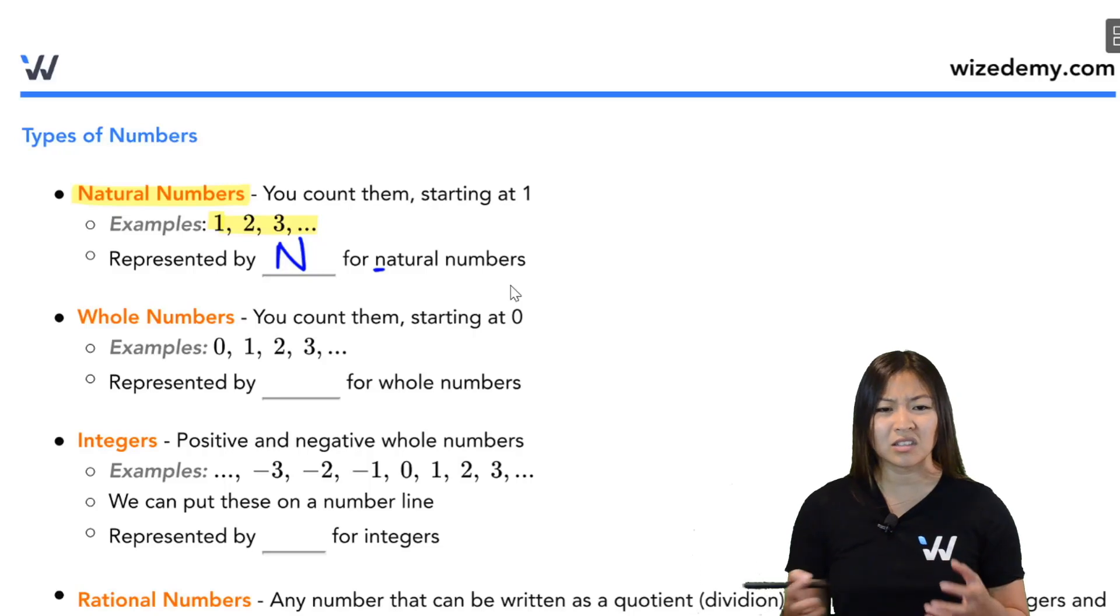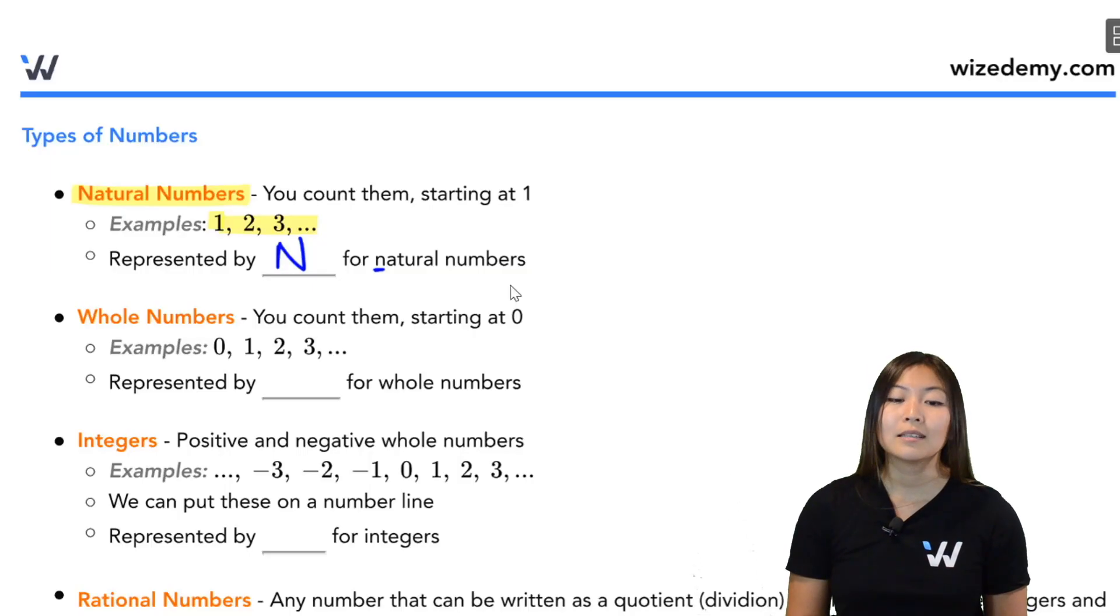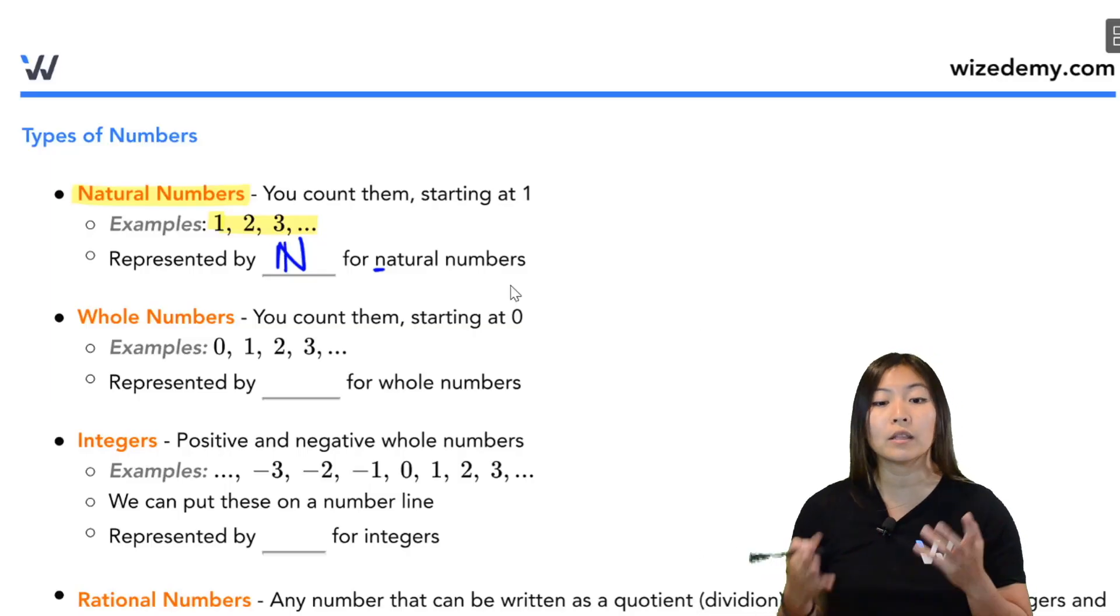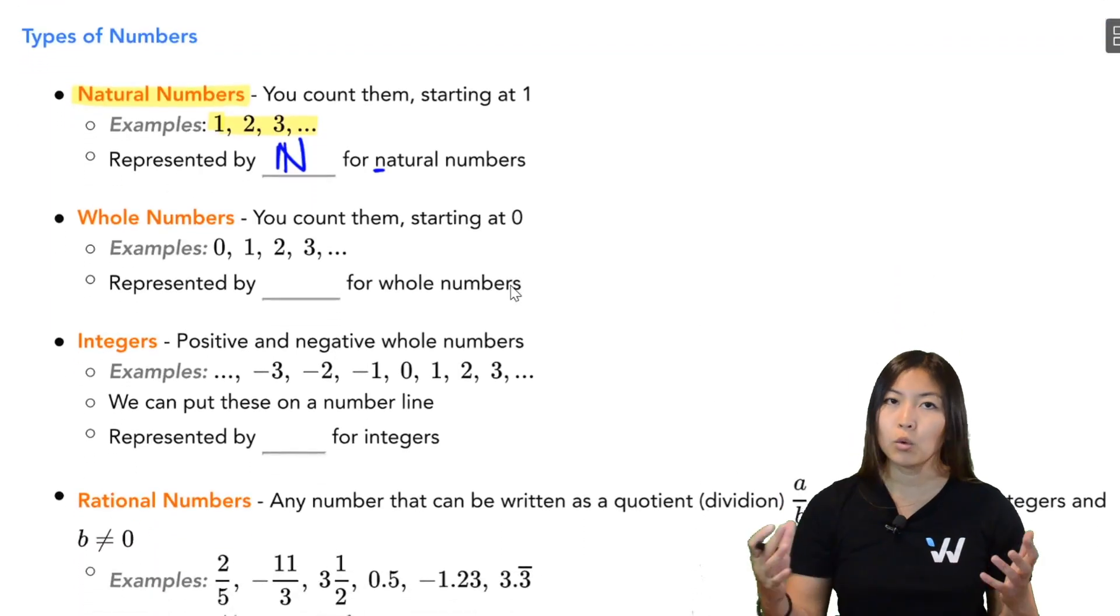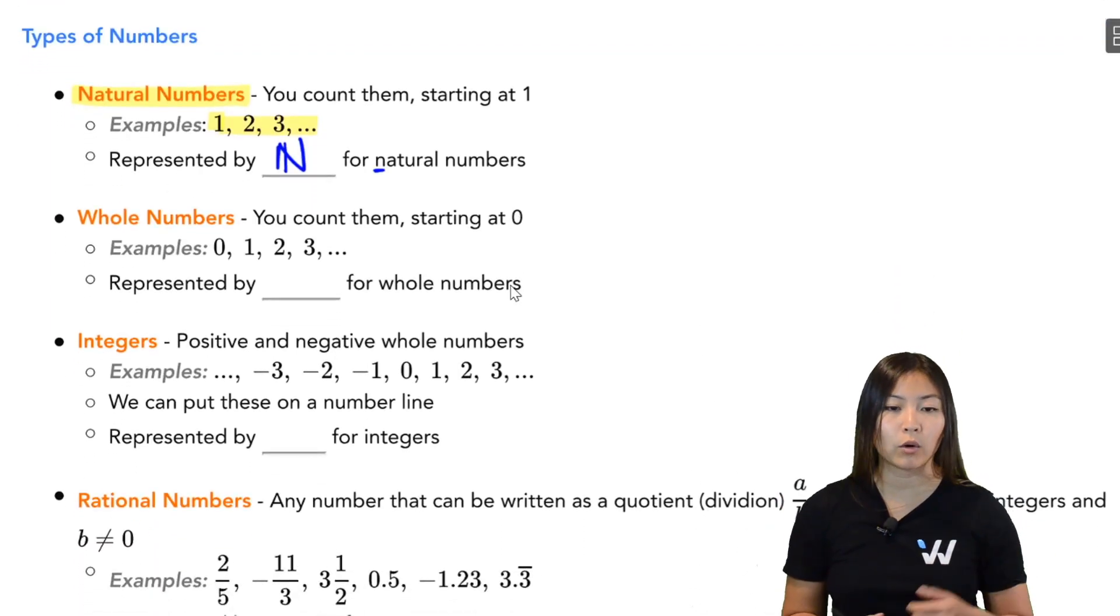You might be asking, Jess, why is there this thing that represents natural numbers? Because math people are lazy. We don't want to write out natural numbers every time, so we give it a little notation, give it a little symbol, which is this N symbol. Now if you take higher level math later on, some textbooks and some teachers are going to write N with a vertical line like this. That's just a fancy symbol so that we don't mix up capital N with the symbol that represents natural numbers. Okay, cool. We have our natural numbers, 1, 2, 3, 4 and so on.